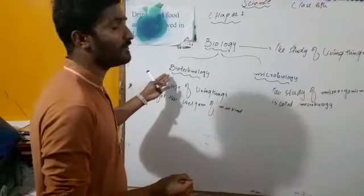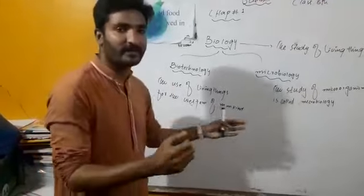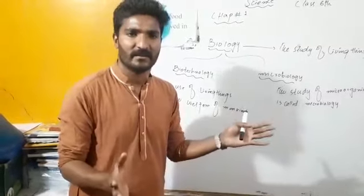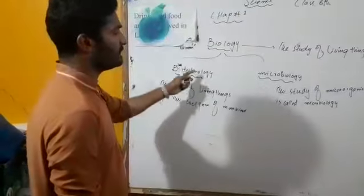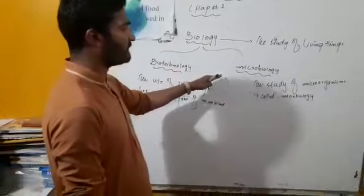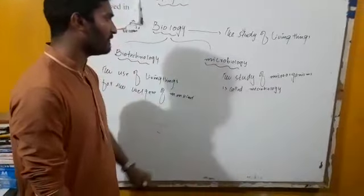So, here we have another example. We have here vaccines. Vaccines for many diseases. Now, we will see another branch of biology.